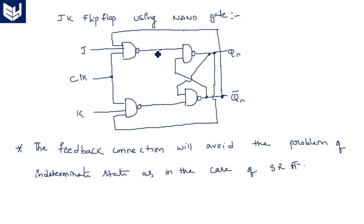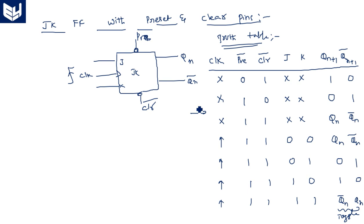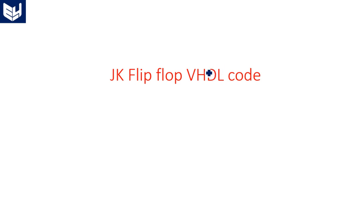We have seen the logic diagram of the JK flip-flop using gates, where we have an additional feedback connection from the output to the input — Q-bar to J and Q to K. This is the truth table showing a normal representation with clock and JK inputs. If you consider the preset and clear also, this is the original and actual truth table.